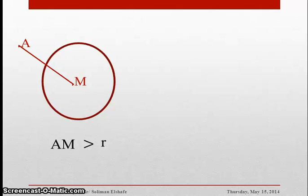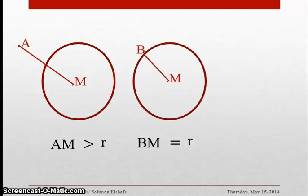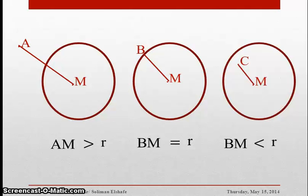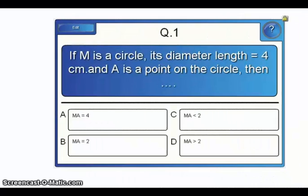To summarize: if the distance between the point and the center is more than the radius, the point is outside the circle. If the distance equals R, the point is on the circle. If the distance is less than the radius, the point is inside the circle. Now we will take exercises about this concept.